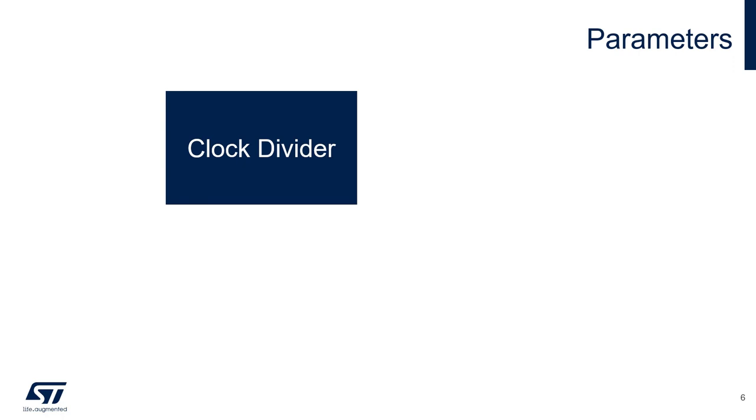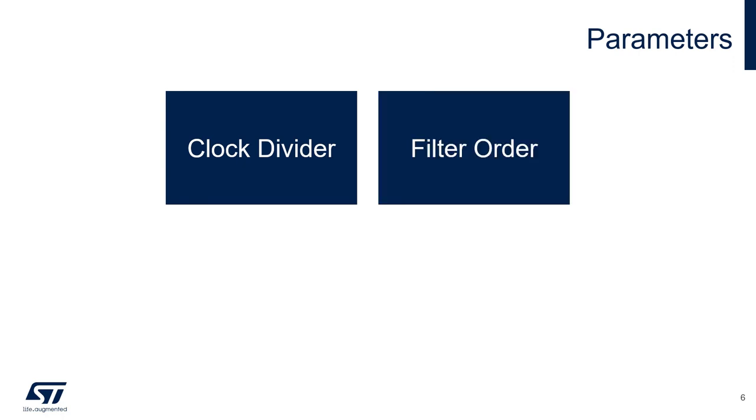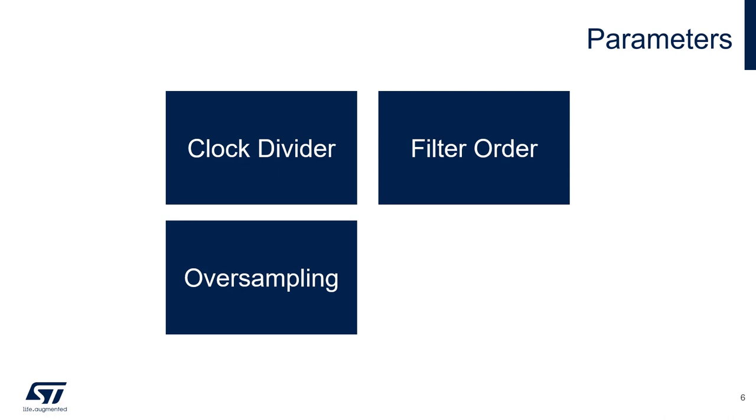Four main parameters must be taken into account for the DFSDM: the clock divider, the filter order, the oversampling, and the right bit shift.